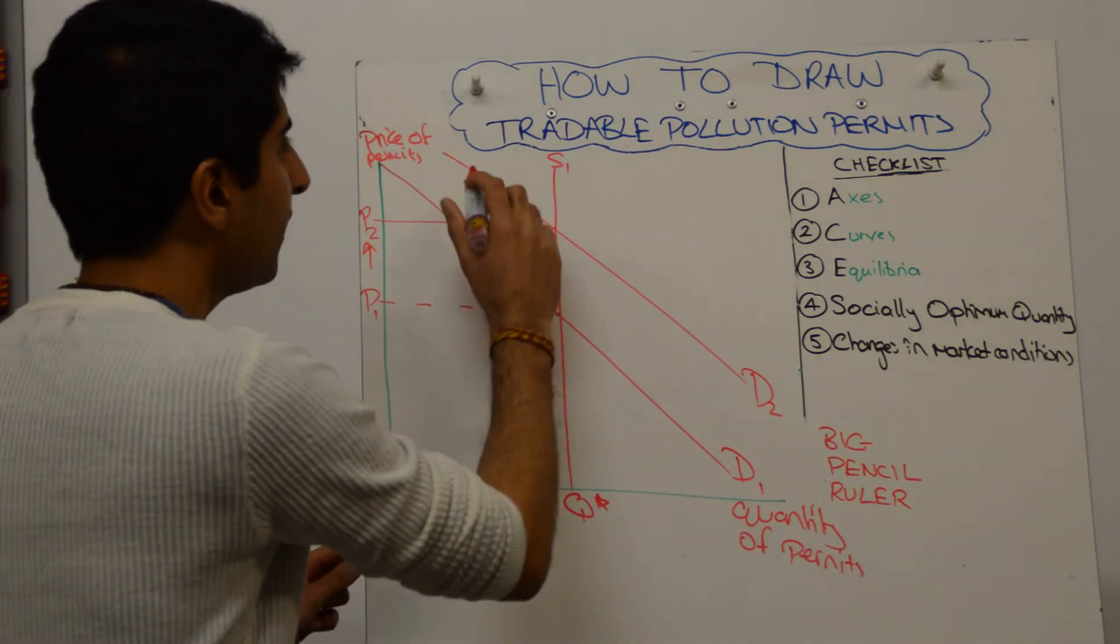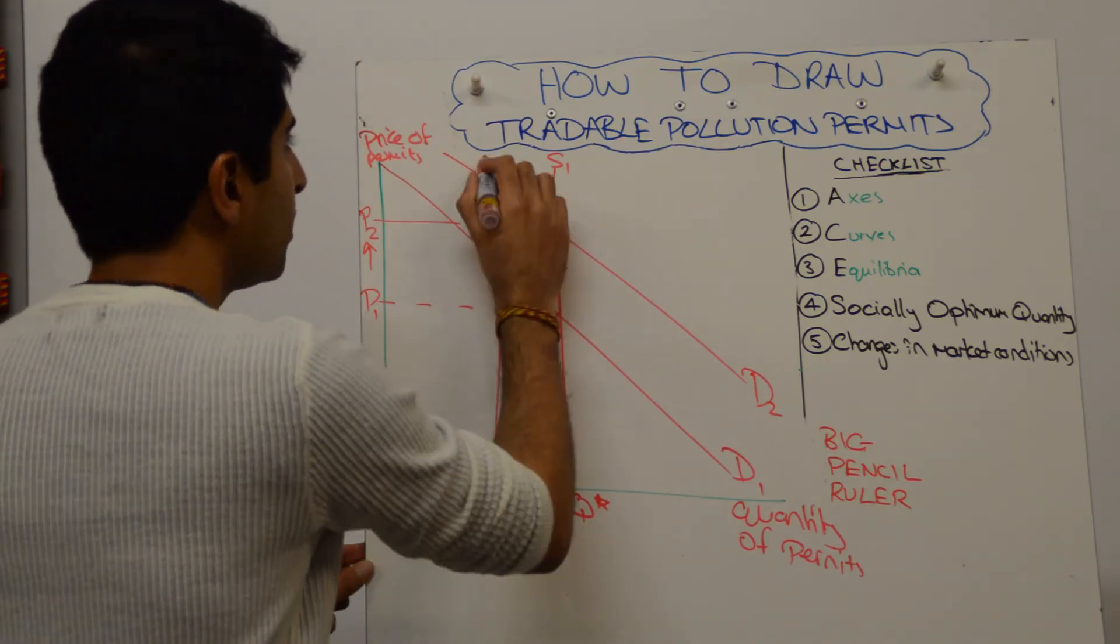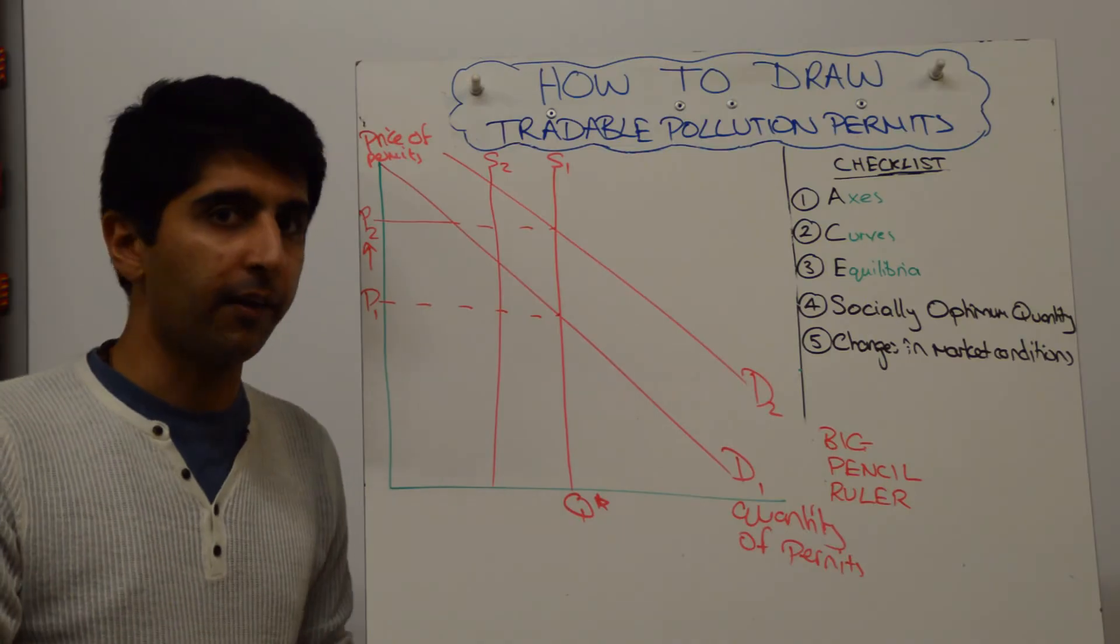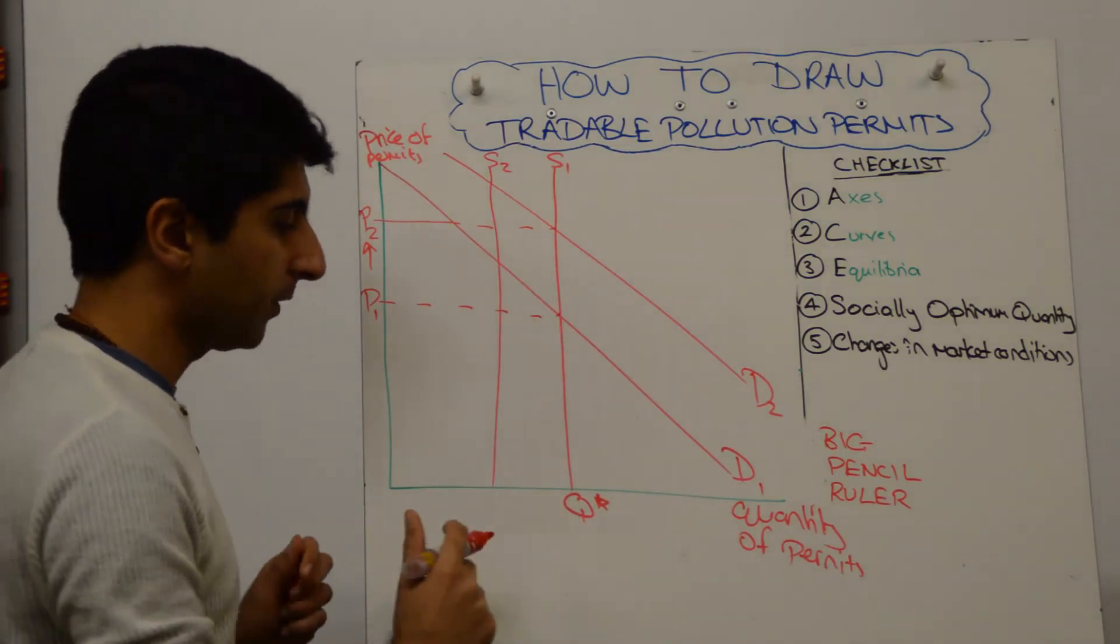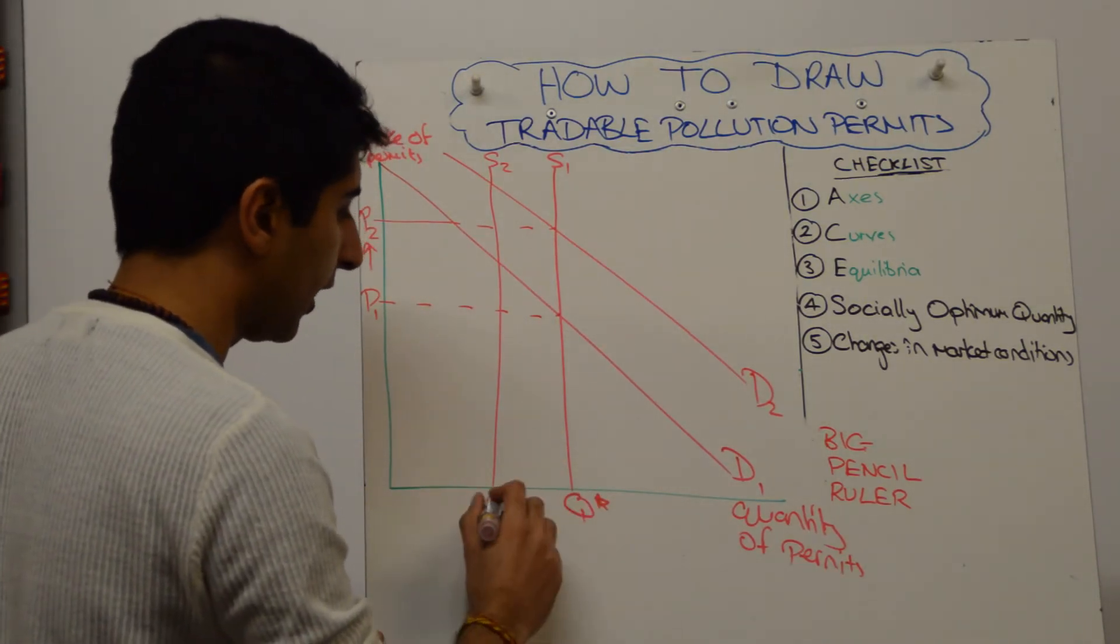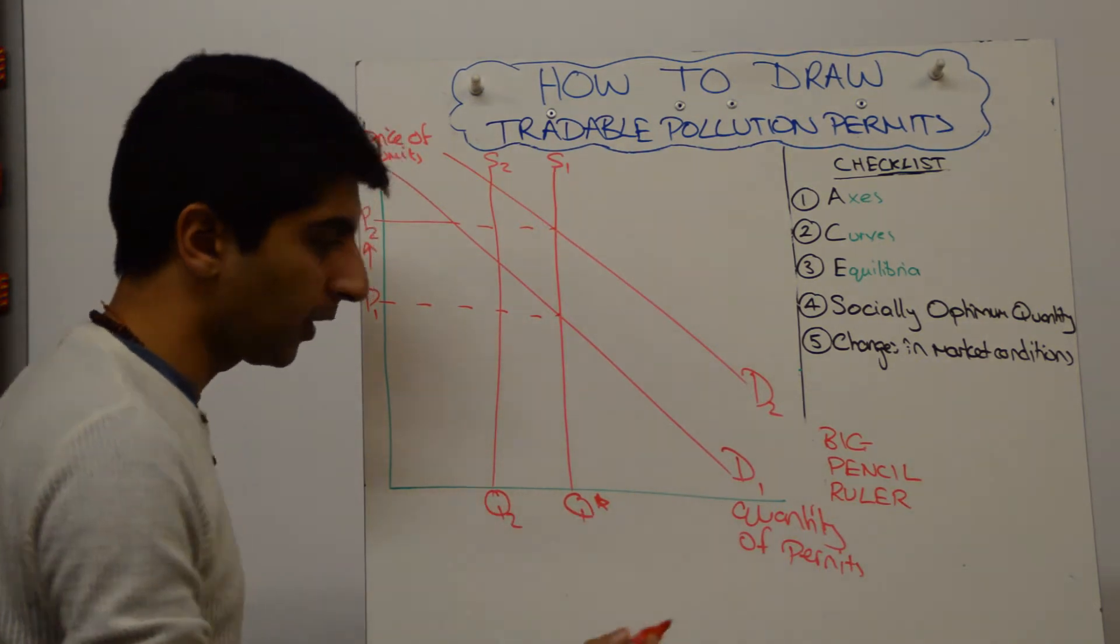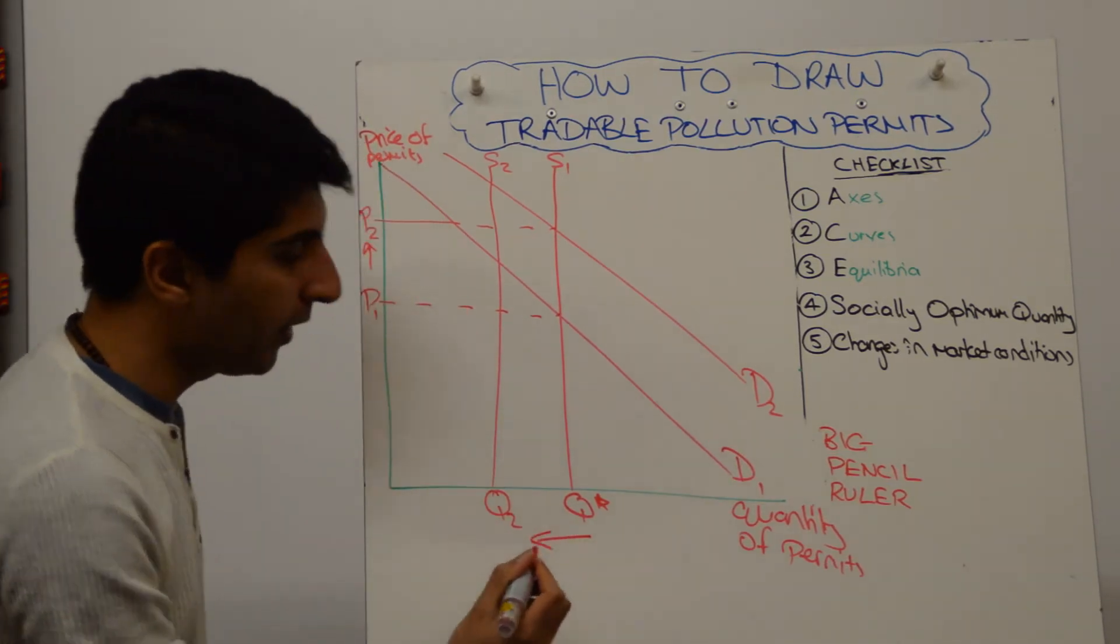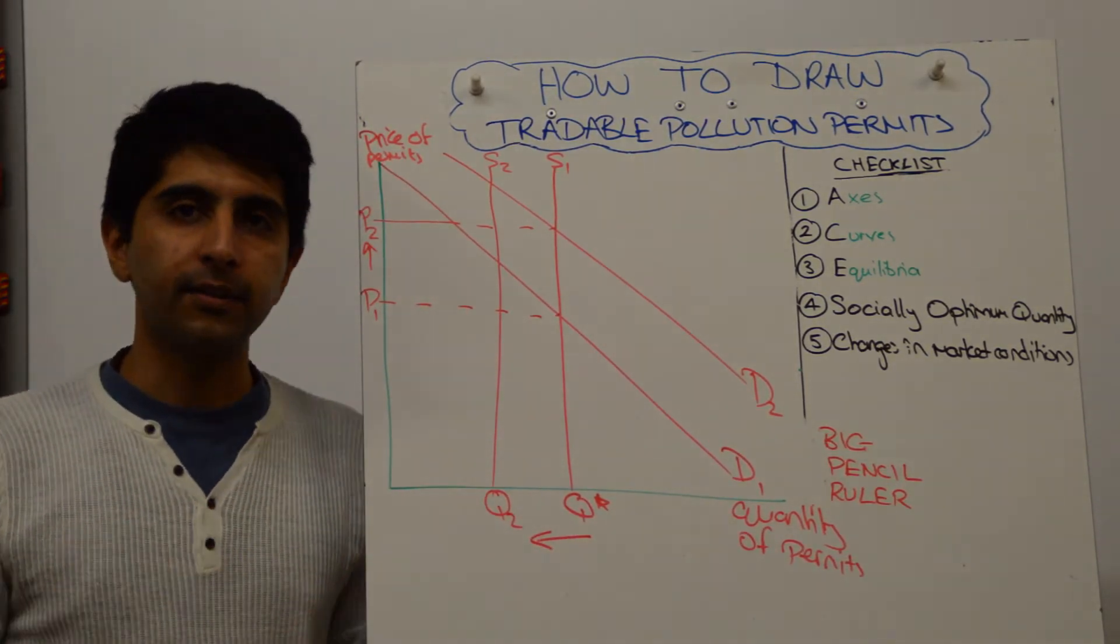How do you show that on the diagram? Well, you can shift the supply curve to the left. Shifting it to the left, still perfectly inelastic because the government sets the supply. But now less. So what you might want to show is from Q-star to maybe Q2, or from Q-star to Q-star 2 or whatever you want to call it. You might want to show that as well if this scheme is successful.